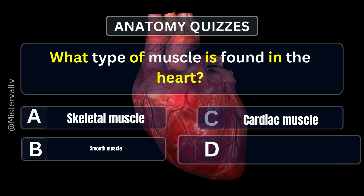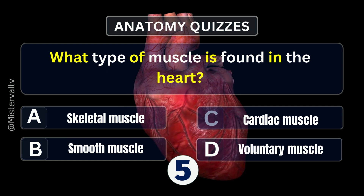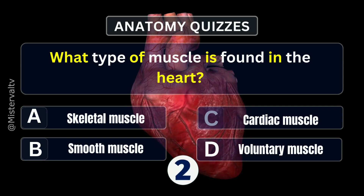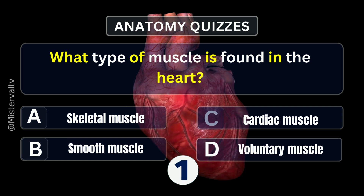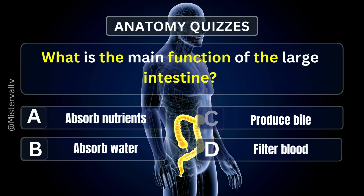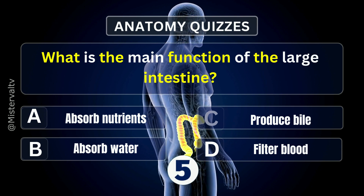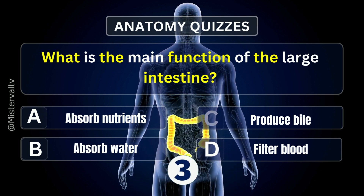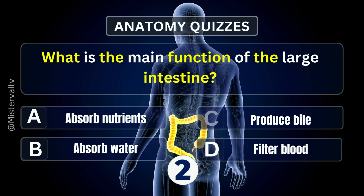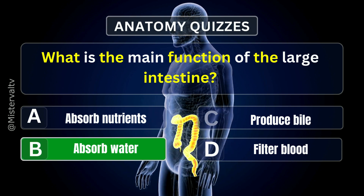What type of muscle is found in the heart? Answer. C. Cardiac. What is the main function of the large intestine? Answer. B. Absorb water.